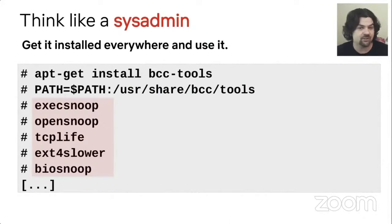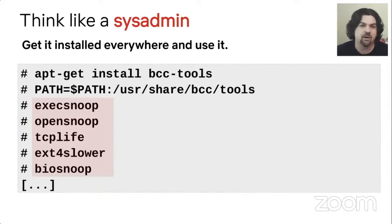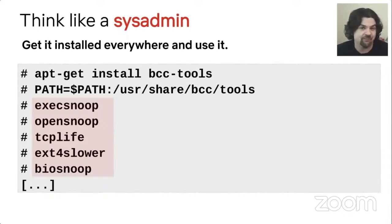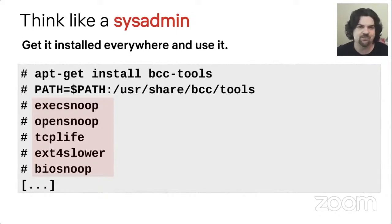I used to be a system administrator, and part of my job was to make sure that the software my company needed was available on all the systems so people could use it. Thinking like a sysadmin, we want to get value out of BPF — what can we install and how can we use it? BCC tools has many performance tools you can run straight away. Install that and you can use things like execsnoop, opensnoop, and so on.